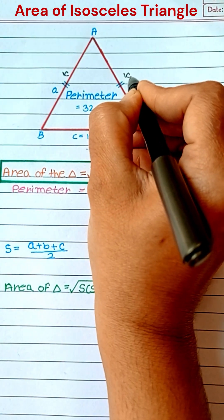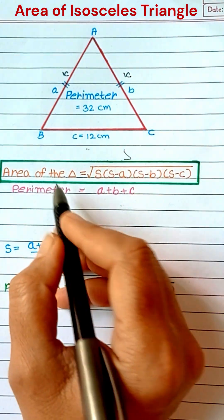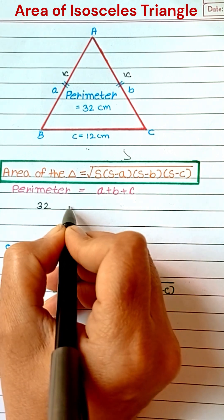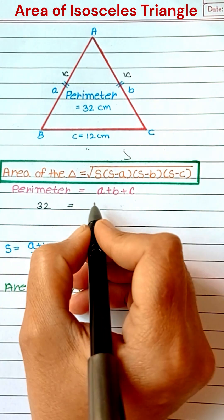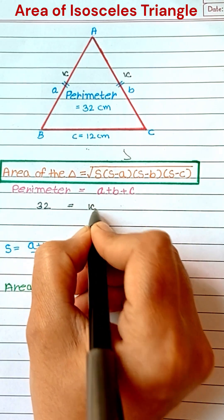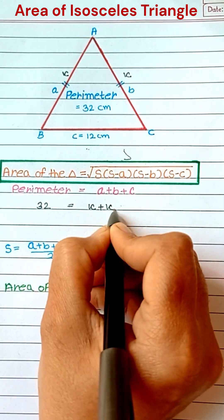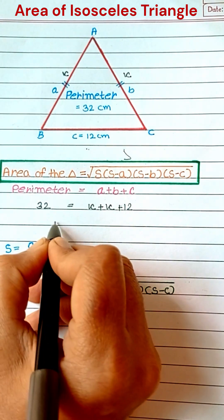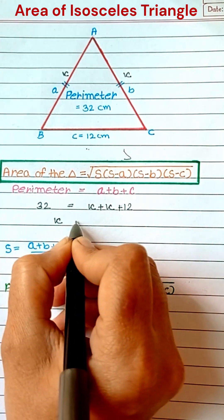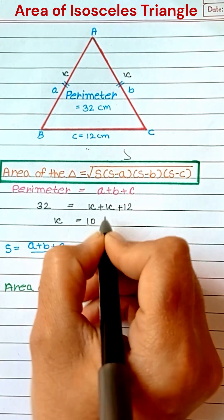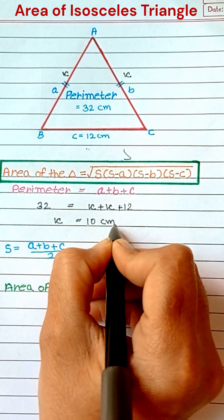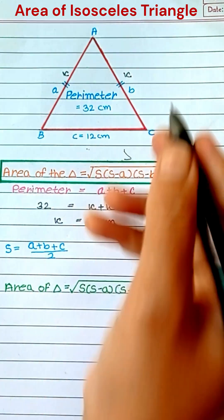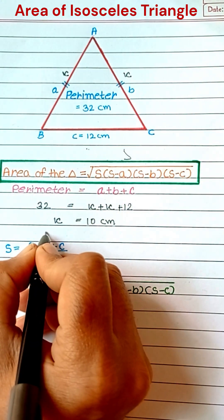For the area, first we have to find out both sides using the formula for perimeter. Both sides are 10 cm.